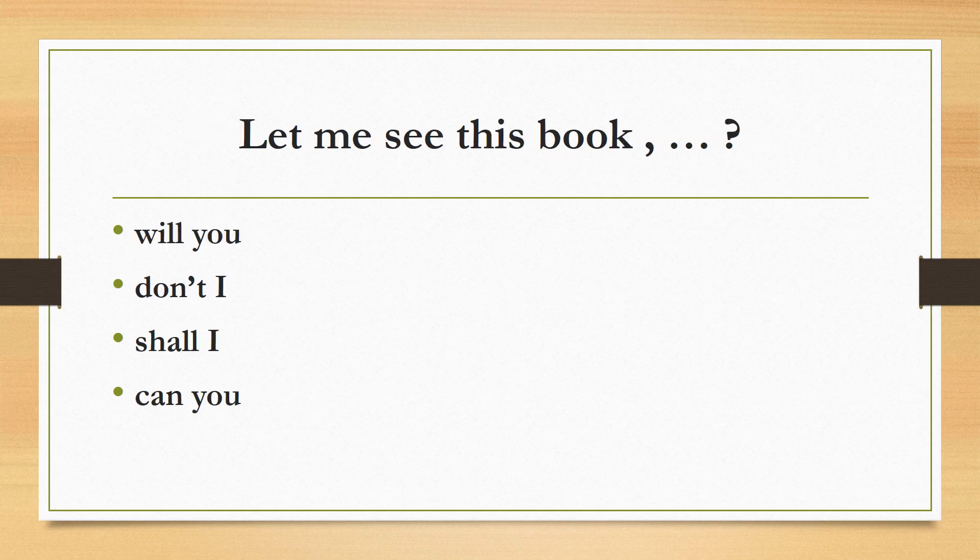Let me see this book, will you, don't I, shall I, can you. The correct answer is 'will you', because when the sentence starts with 'let', the tag question is 'will you'. When it's 'let's', the tag question is 'shall we'.